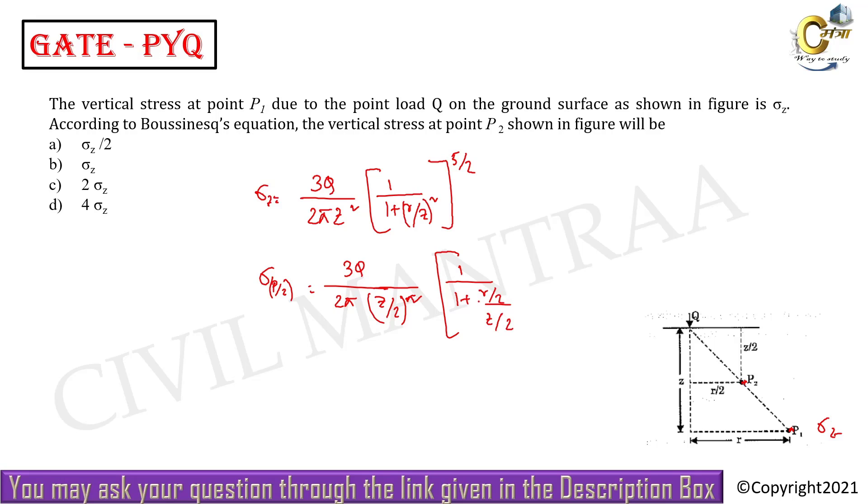So this r by 2 and z by 2 cancel out. So here what happened: 3Q into 4 divided by 2π z squared, this becomes 1 by 1 plus r by z whole square, whole to the power 5 by 2.